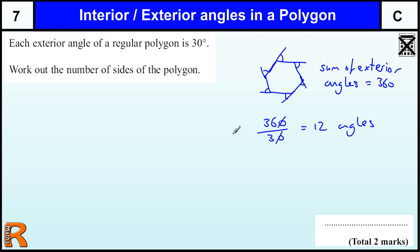And if it's 12 angles and they're all the same, then there are 12 sides to the polygon. And that's all you need to know there.